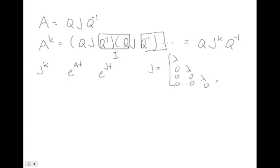So it's got lambda on the diagonals. It's got ones on the super diagonals and zeros everywhere else. So a four by four Jordan form, a Jordan block.